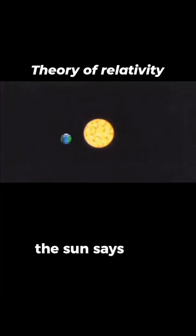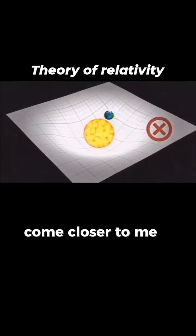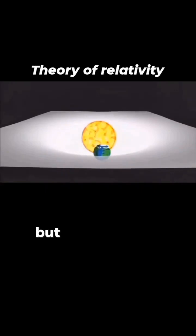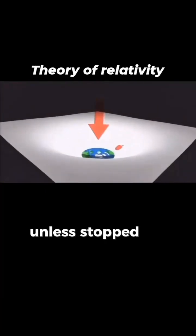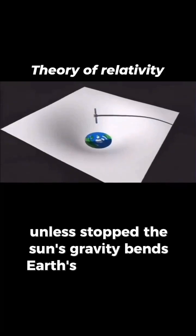The sun says, 'Earth, come closer to me.' So Earth keeps falling toward the sun. But Newton's law says objects move in a straight line unless stopped. The sun's gravity bends Earth's straight path.